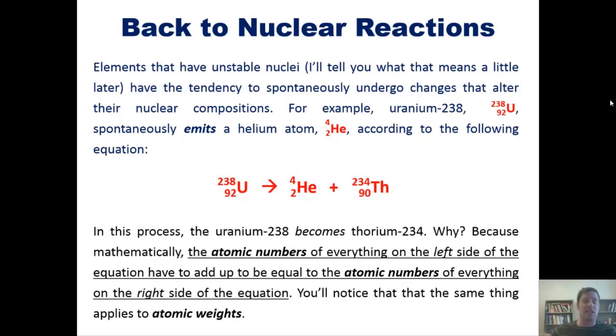As you look at this equation closely, you'll notice that the uranium atom, as it gives off this helium atom, becomes thorium-234. Why? Because mathematically, the atomic numbers of everything on the left side of the equation have to add up to equal the atomic numbers of everything on the right side. You'll notice that this also applies to their atomic weights.